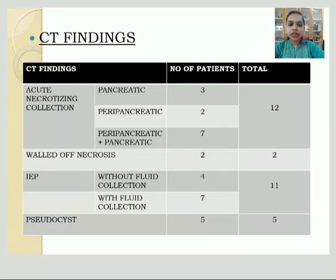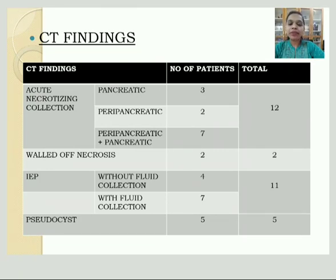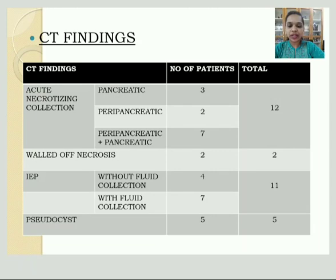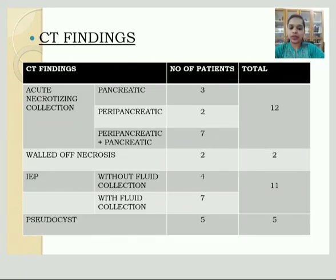Coming to CT imaging findings according to Revised Atlanta Classification: for acute necrotizing collection, there were 12 patients total, of which 3 had pancreatic collection, 2 had peripancreatic collection, and 7 had both pancreatic and peripancreatic collection. Two patients had walled-off necrosis. For interstitial edematous pancreatitis, 4 patients had no fluid collection, 7 had fluid collection, and 5 had features of pseudocyst.